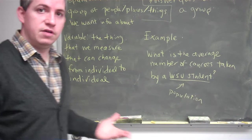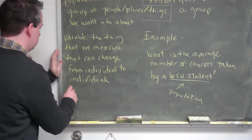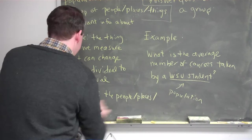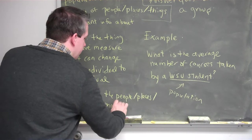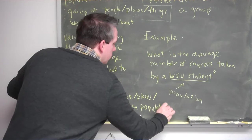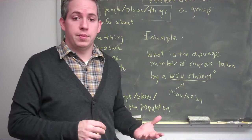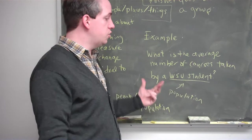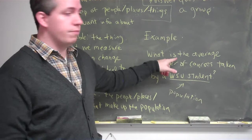Which brings us to the idea of individual. An individual is one person, place, or thing inside the population. When we're studying something in an observational study — basically going out, collecting the data, then organizing and describing it — we're going to have different questions we might be asking about different groups of people. Those different groups are our populations, the question we're measuring is our variable, and the individuals are the individual people in our population.